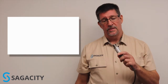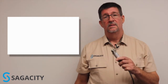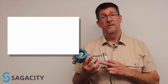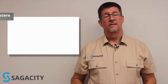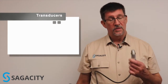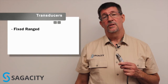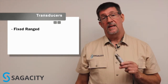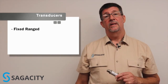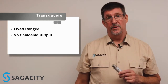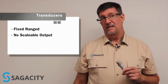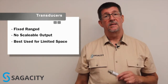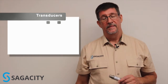Pressure transducers have a Wheatstone bridge, and a transducer is built into the transmitter, but they have differences. Transducers are typically a fixed range device, although like this one it's calibratable. It doesn't have a scalable output and is typically used in applications where space is limited and you don't need a display.